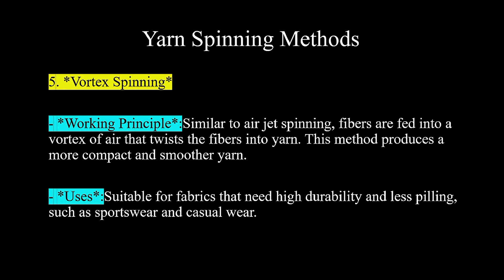Fifth is vortex spinning, which is upcoming and becoming a very common method in textile manufacturing. Its working principle is similar to air jet spinning — fibers are fed into a vortex of air that twists the fibers into yarn. This method produces a more compact and smoother yarn with good quality. It is suitable for fabrics that need high durability and less pilling, such as sportswear and casual wear.